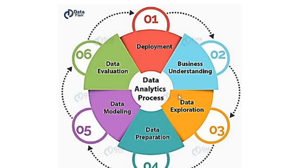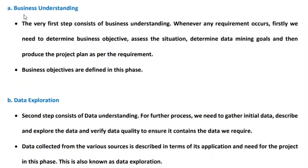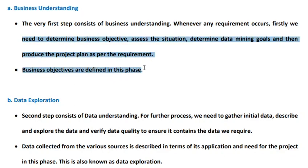Let us move into each phase in greater detail. In the business understanding phase, what we tend to do is determine the business objectives, assess the situation to identify constraints under which the attainment of objectives should be done, determine data mining goals, and produce a viable project plan. Business objectives are defined in this phase — we identify the most notable business objectives, assess the situation for all possible constraints, determine data mining goals, and produce a plan that fits our requirements.